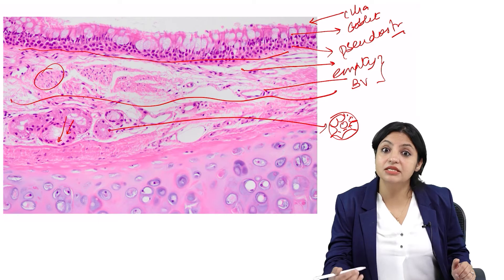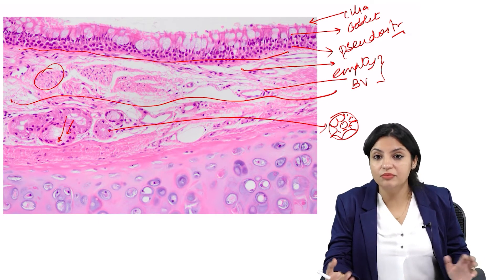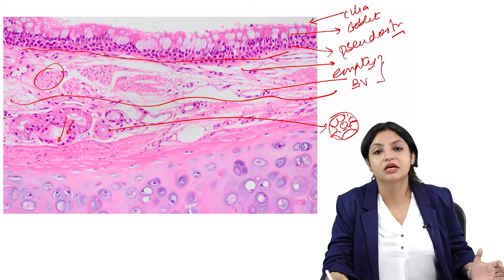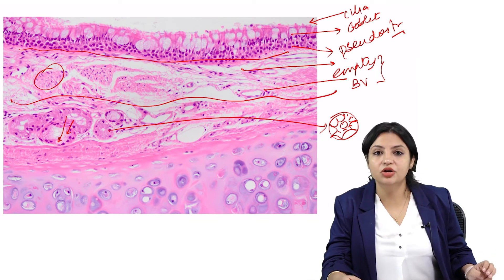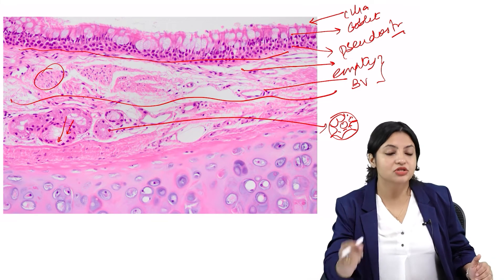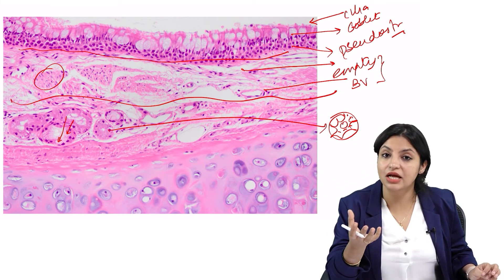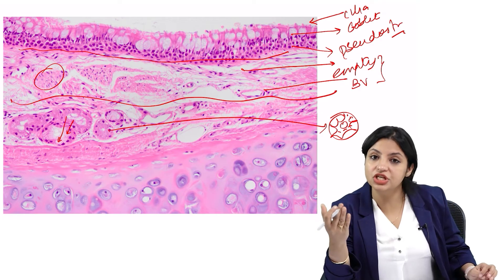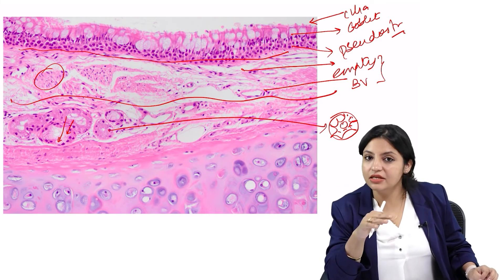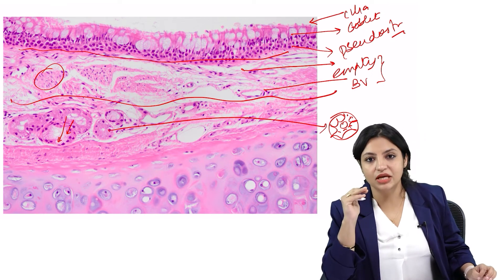If the submucosal glands are excessively increased with no change in the mucosa, then your differential should be chronic bronchitis. Whereas if the epithelium also shows remodeling — the basement membrane is very thick, goblet cells are excessively increased, and submucosal glands are also increased — then both mucosa and submucosa show changes and it will be asthma. You have to study and see together.